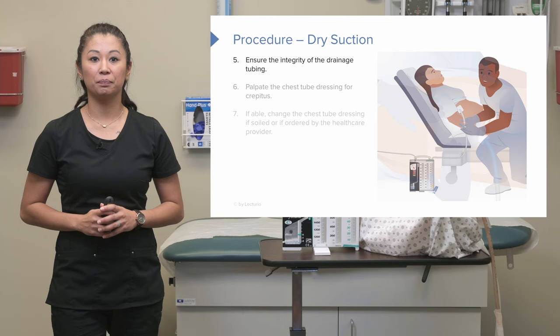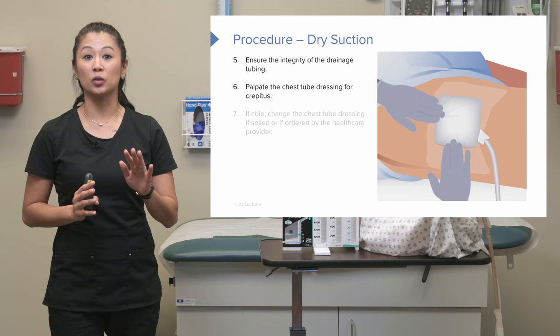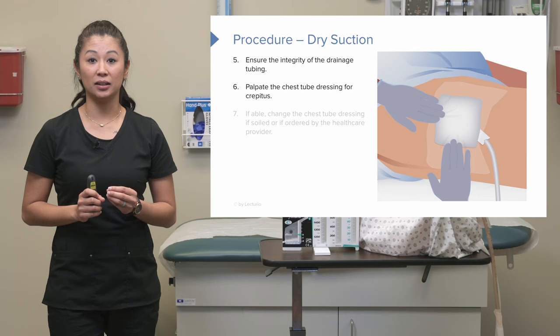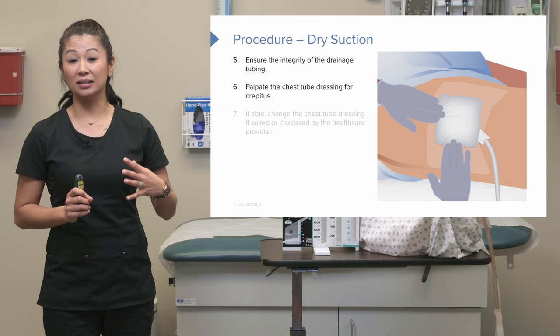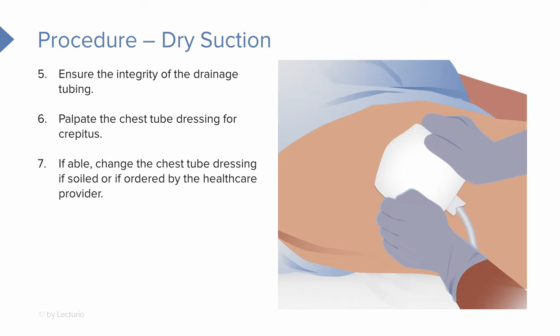Don't forget to look at the chest tube dressing itself — always go back to your patient. Palpate around that chest tube dressing. If there's a problem, you may feel a Rice Krispie sensation underneath the skin, which means air has leaked under the skin. That feeling can extend from the chest tube dressing all the way up the lateral side of the patient to their neck, so make sure you're assessing your patient thoroughly. Change the dressing if it's soiled or ordered by the healthcare provider.